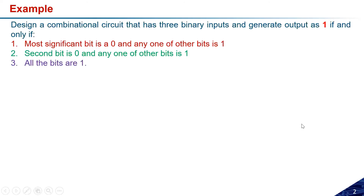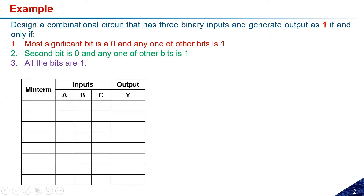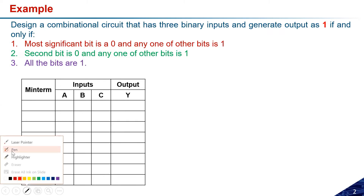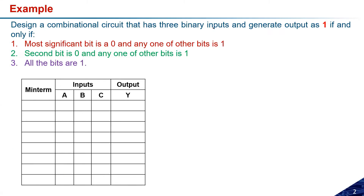Suppose I have a problem. Here is a simple problem to consider. The problem is: design a combinational logic circuit that has 3 binary inputs and generates output as 1 if and only if certain conditions are met. The first condition is that the most significant bit is 0 and any one of the other bits is 1. Since we have 3 binary inputs, the total number of possible combinations will be 8.